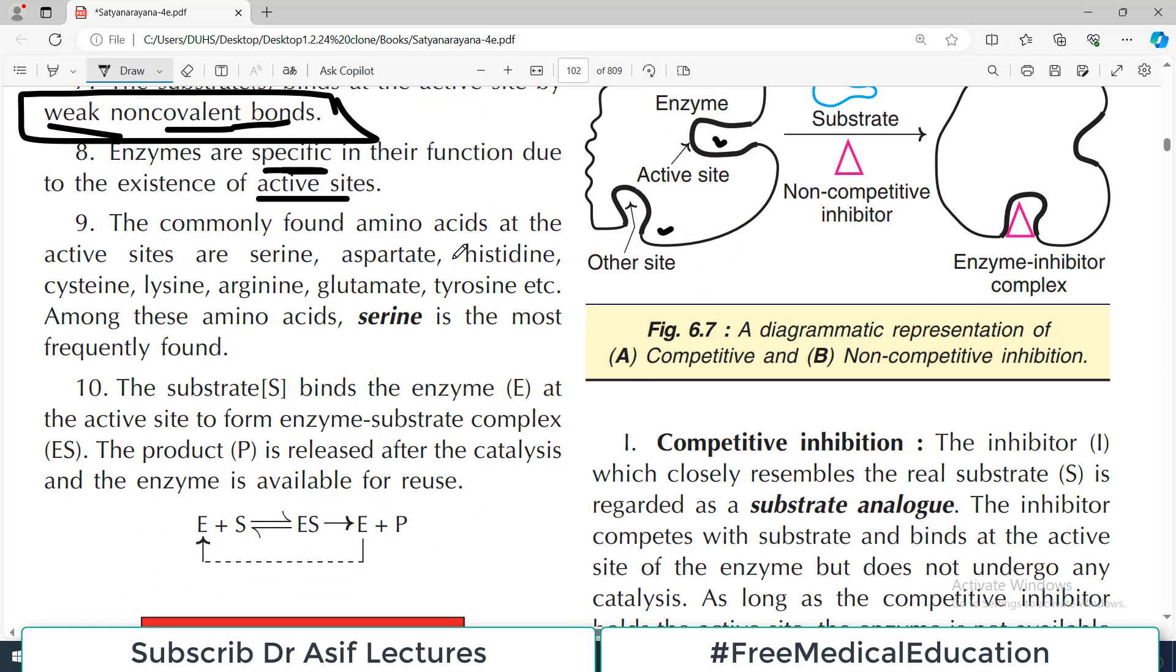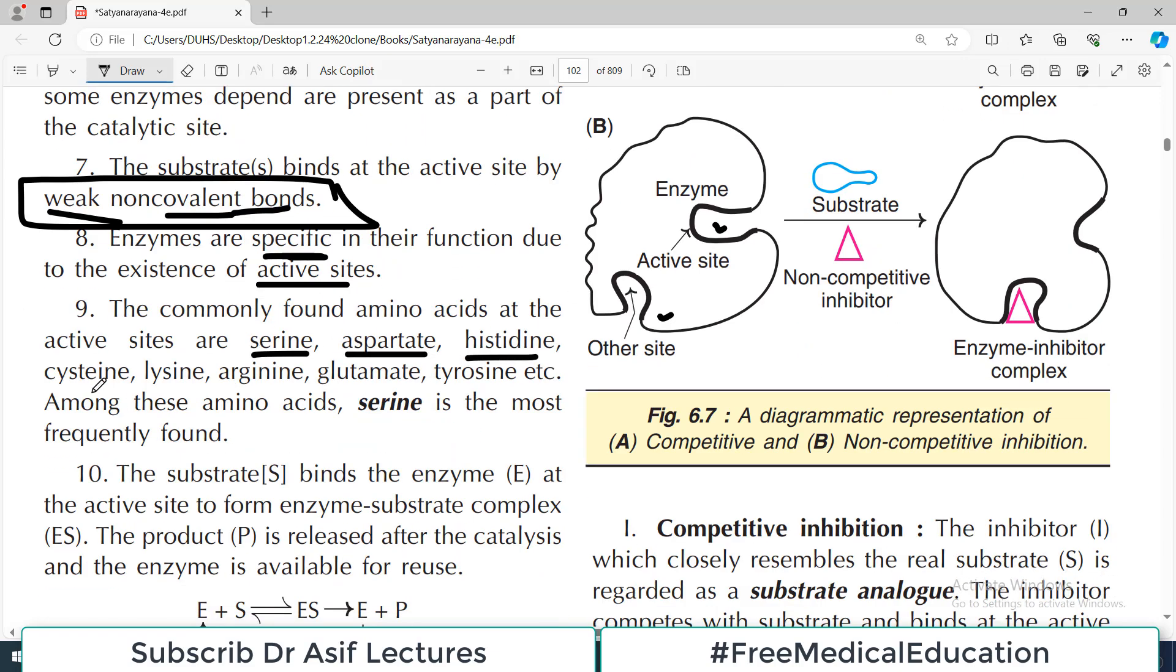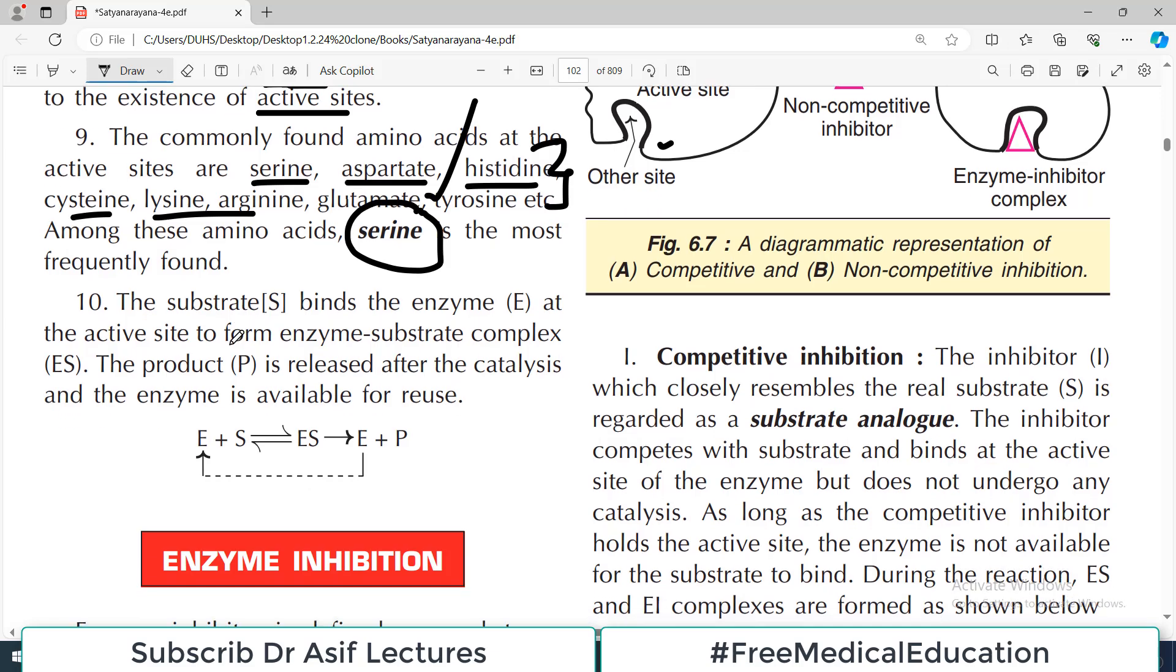The commonly found amino acids at the active sites - it's not a rule of thumb, there can be variations, but usually in the active sites the amino acids are serine, aspartate, histidine, cysteine, and lysine. These are commonly found amino acids in the active site. Among these, the most commonly found is serine. If you need to remember one name, serine should be the name you remember.